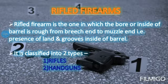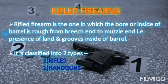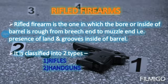The first one is rifles and the second one is handguns. Rifle firearms have a barrel that is completely rough — rough meaning that lands and grooves are present. This is what we call rifling.